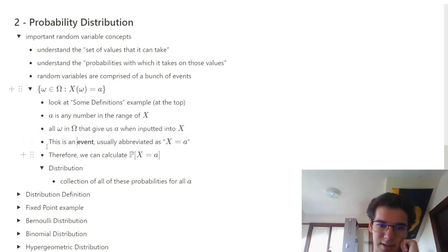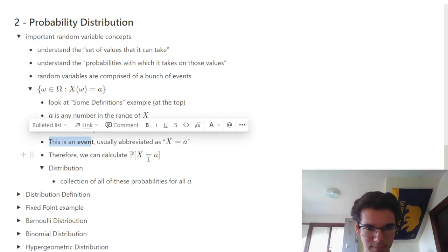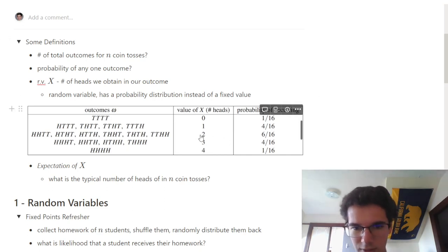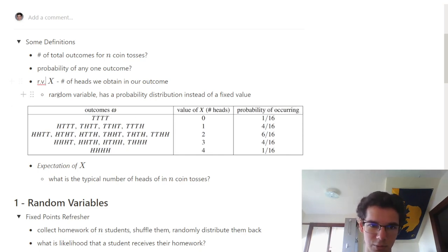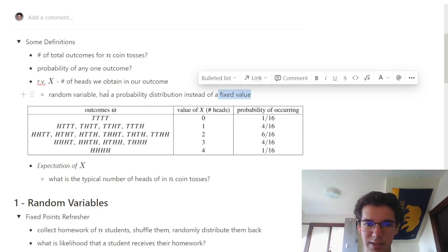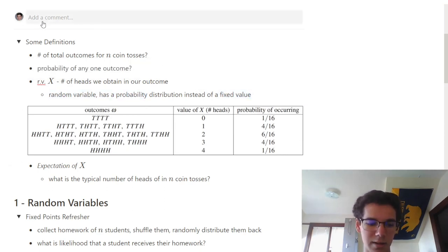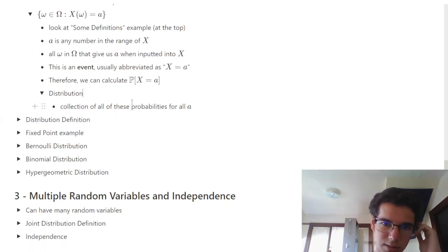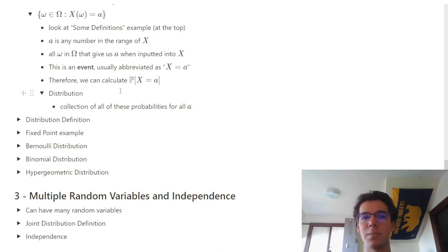This is really a random variable — if we define it as the number of outcomes that have, say, 2 heads, that is an event with a fixed value. Whereas the random variable, when it represents any arbitrary number of heads in our outcome, has a distribution. Hopefully the distinction between events and random variables is clear. Random variables are made up of a bunch of events, and sometimes those events are called indicator events.